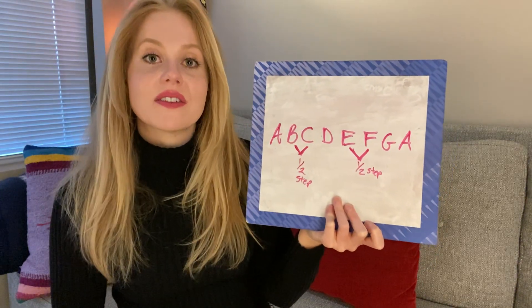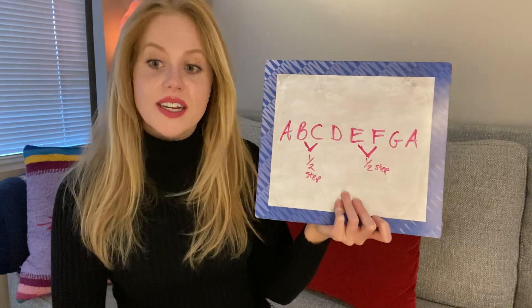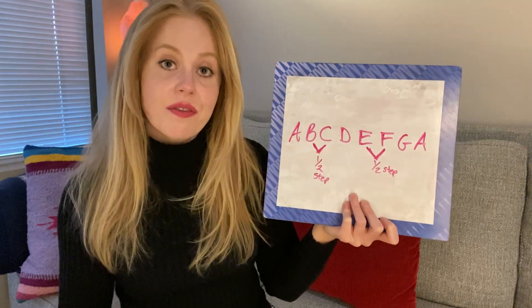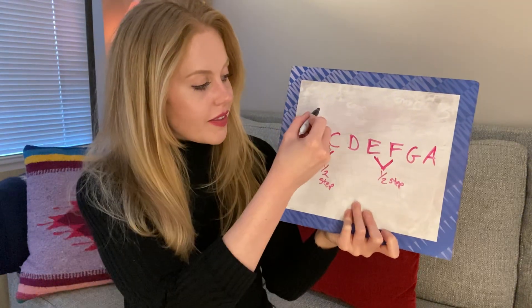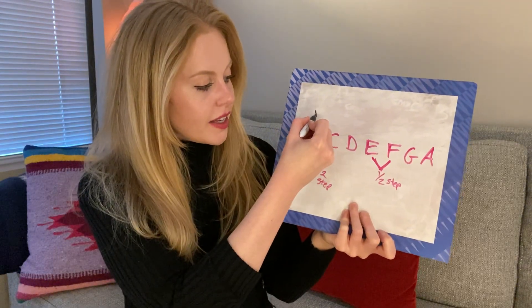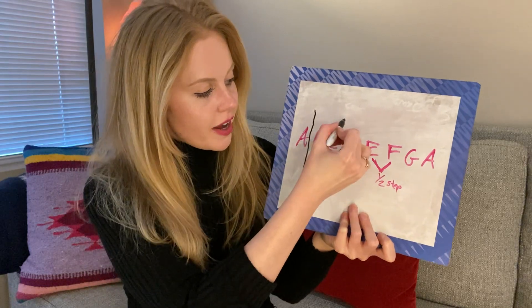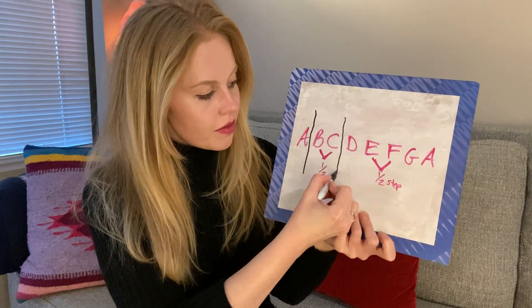Every place else is a whole step, which means we can divide it in half — and that's where our black key would go. So let's go ahead and divide that in half.